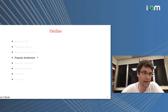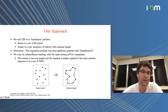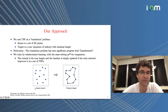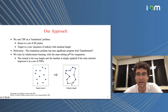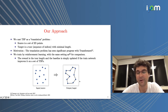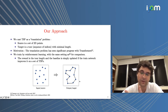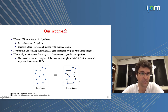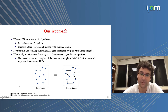Let me now introduce our proposed architecture. We cast TSP as a translation problem where the source language is a set of 2D points and the target language is a sequence of indices with minimal length. The motivation is that Transformers are getting very good for NLP and computer vision, so we wanted to see their quality for combinatorial optimization. We train with reinforcement learning using the same setting as Kool, van Hoof, and Welling.